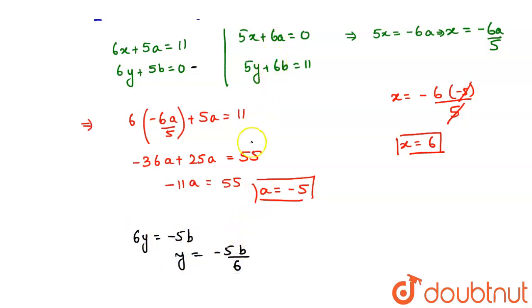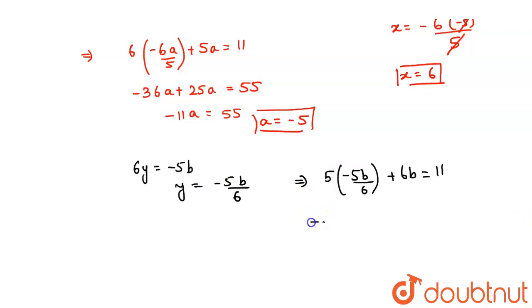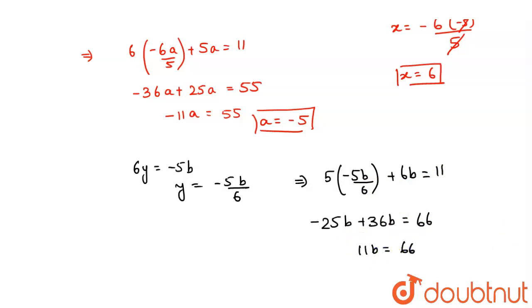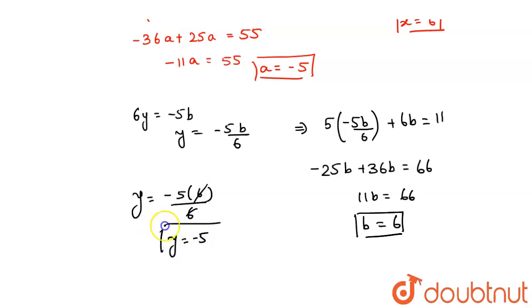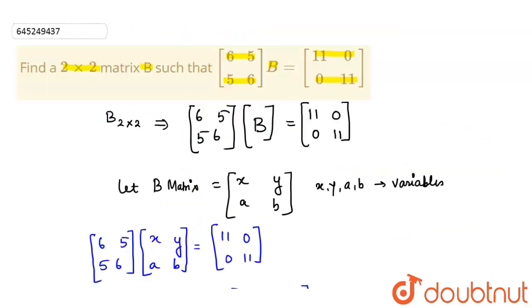Substituting y = −5b/6 into 5y + 6b = 11 gives 5(−5b/6) + 6b = 11, which becomes (−25b + 36b)/6 = 11, so 11b = 66, giving b = 6. Then y = −5(6)/6 = −5.